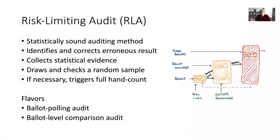Once you have done the audit, the outcome is either: yes, I found enough statistical evidence to support the claim that the election result is correct — or I didn't, in which case I have to go back, draw a bigger sample, and in the worst case do a full recount. That's the idea of a risk-limiting audit.